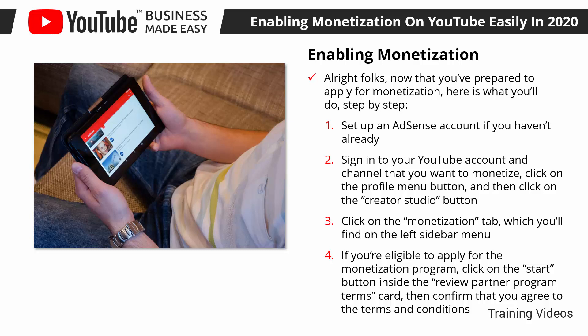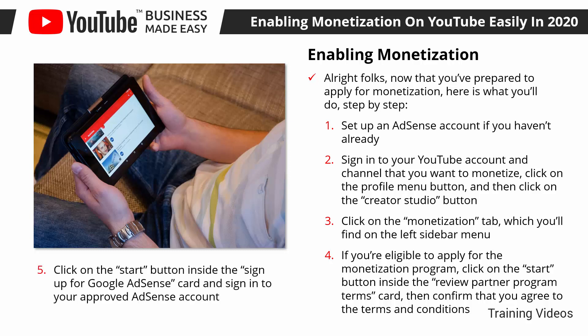Then confirm that you agree to the terms and conditions. Number 5: Click on the Start button inside the Sign Up for Google AdSense card and sign in to your approved AdSense account. Now all you have to do is wait for approval, which can take 30 days or less. In that time, keep uploading awesome content and engaging with your audience.